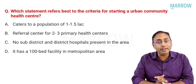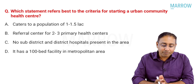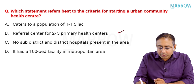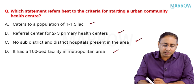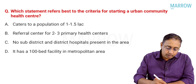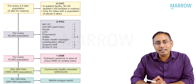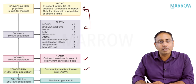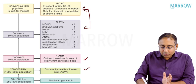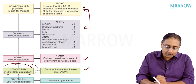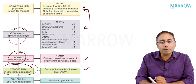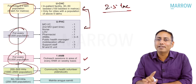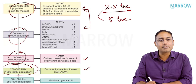Next question: which statement best refers to criteria for starting an urban community health center? The urban healthcare setup includes urban ASHA workers (200–500 population), urban PHC (50,000 population), urban ANM centers (10,000 population), and urban CHC (2.5 lakh population in all cities; 5 lakh in metropolitan cities). These are the key population norms.